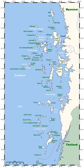Archipelagos are often volcanic, forming along island arcs generated by subduction zones or hotspots, but may also be the result of erosion, deposition, and land elevation. Depending on their geological origin, islands forming archipelagos can be referred to as oceanic islands, continental fragments, and continental islands.